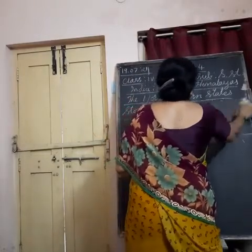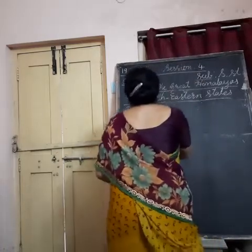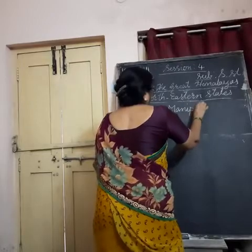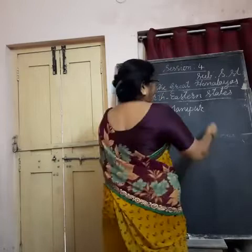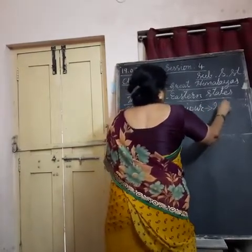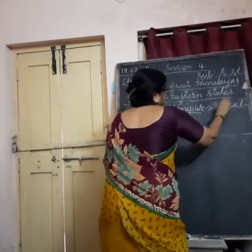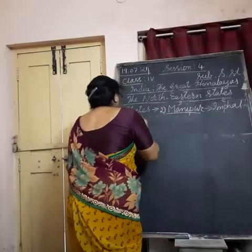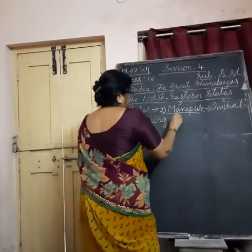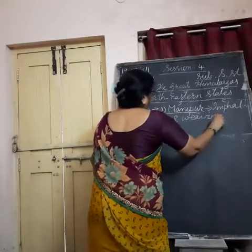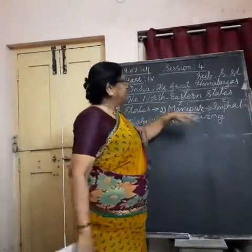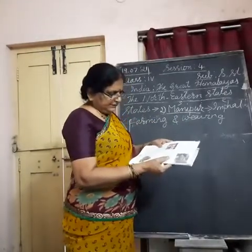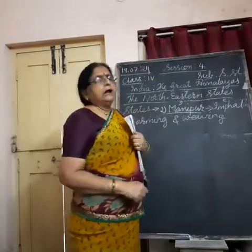We are going to study about the second state now. Second state is Manipur. Imphal is the capital of Manipur. Here, farming is the main occupation of the people. People engage themselves in farming and weaving. They make beautiful articles through bamboo — bamboo handicraft is also famous here. They also make beautiful things using cane and leather.